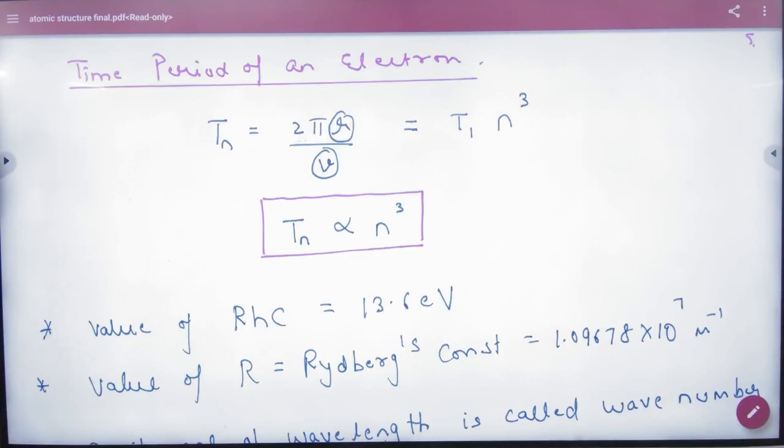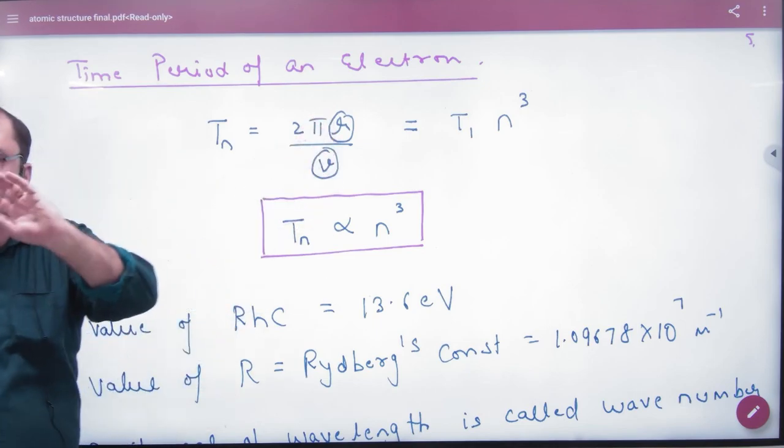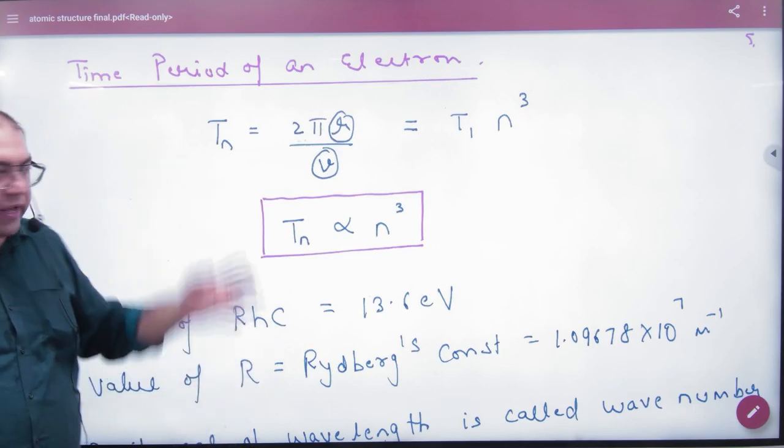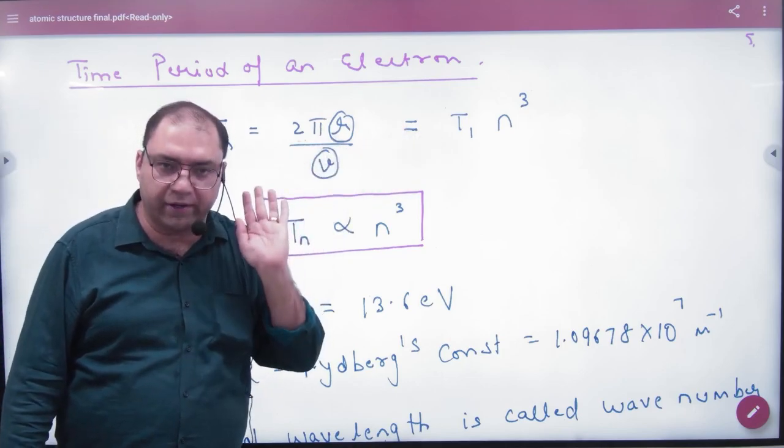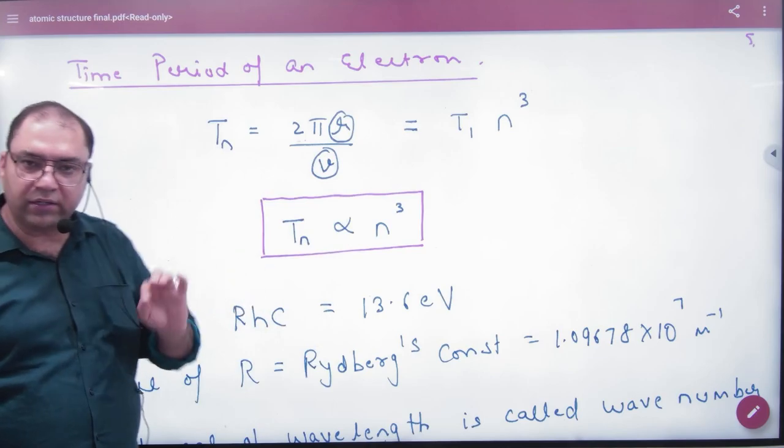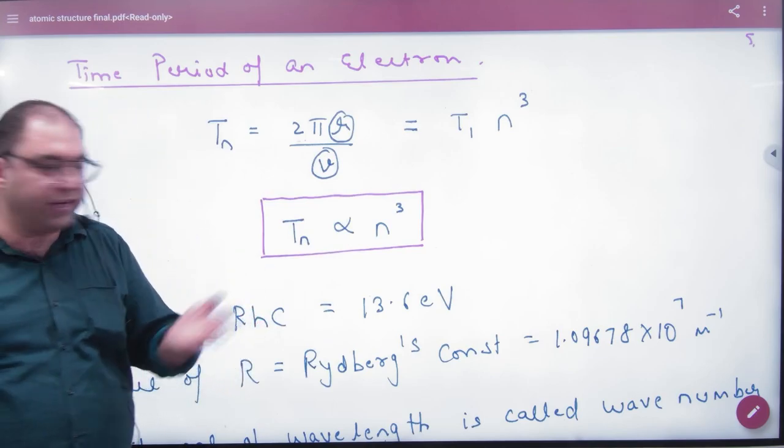Time period of an electron. The time period is 2πr/v. When you put the values of r and v, the time period will be proportional to n³. Remember this result: time period is proportional to n cube.